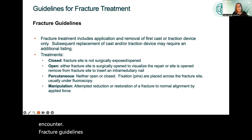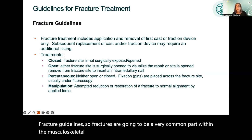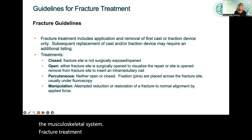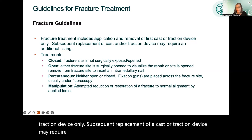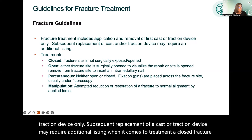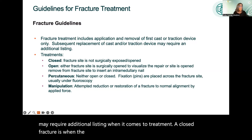Fracture guidelines. Fractures are going to be a very common part within the musculoskeletal system. Fracture treatment will include the application and removal of a cast or traction device only. A closed fracture is when the site is not surgically exposed or open — you cannot see the bone.